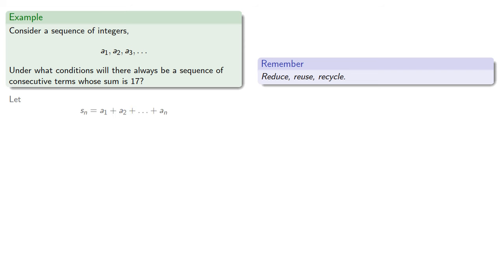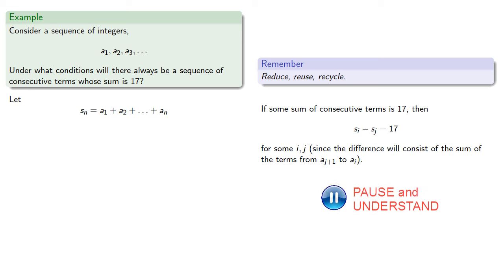So let's again consider our partial sums. If some sum of consecutive terms is 17, then the difference between two partial sums must be 17 for some i and j, since the difference will consist of the sum of the terms from aj plus 1 to ai. And so that says si is sj plus 17.